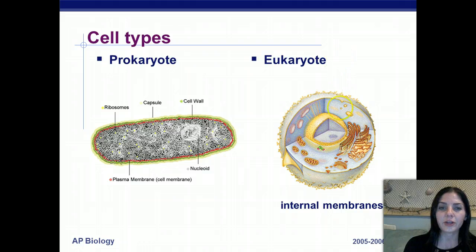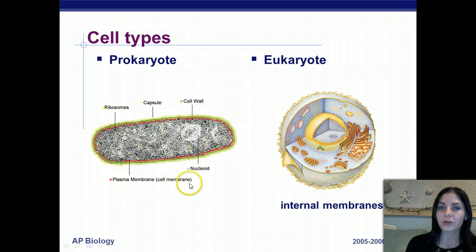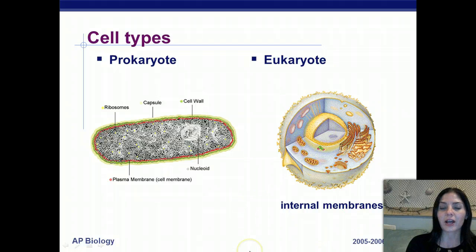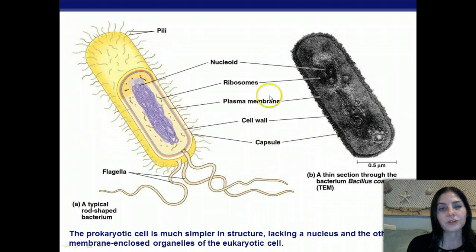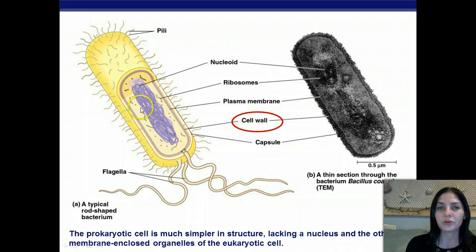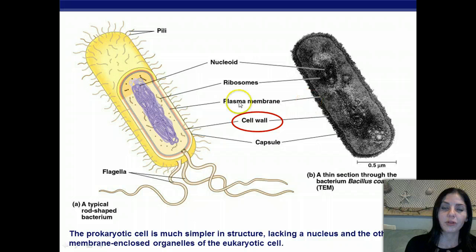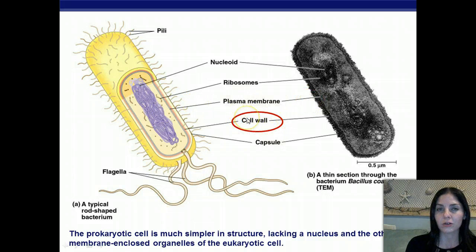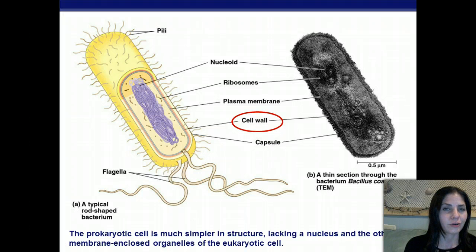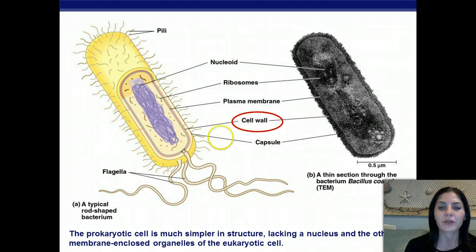Prokaryotic cells are a lot smaller and more simple than eukaryotic cells. Eukaryotic cells have internal membranes that enclose internal organelles. Prokaryotic cells have a nucleoid region, pili, ribosomes, plasma membrane, and a cell wall. Other types of cells that have cell walls include plant cells as well as fungi cells. They also have a capsule.